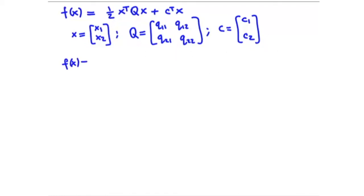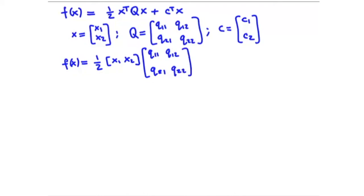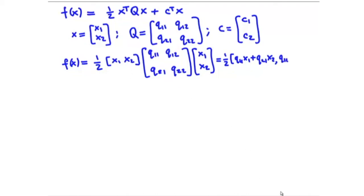With these notations we can write out what this function looks like. f(x) = ½ xᵀQx. Computing this: xᵀ = [x₁, x₂], times Q = [[q₁₁, q₁₂], [q₂₁, q₂₂]], times x = [x₁, x₂]ᵀ. Multiplying the row vector by the matrix first gives the components q₁₁x₁ + q₂₁x₂ and q₁₂x₁ + q₂₂x₂.